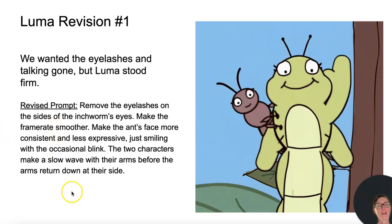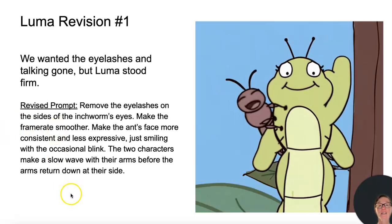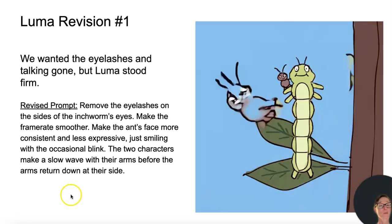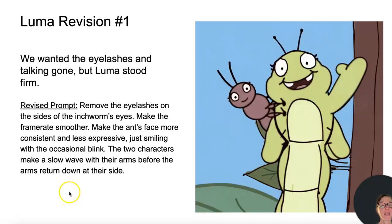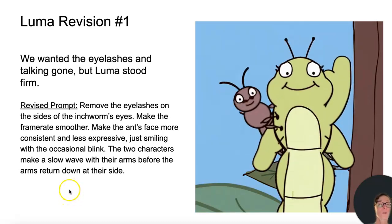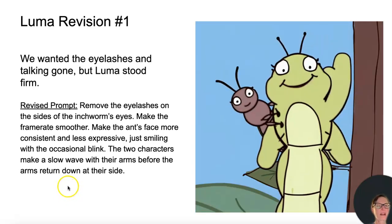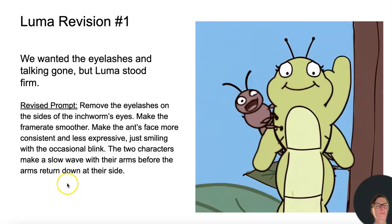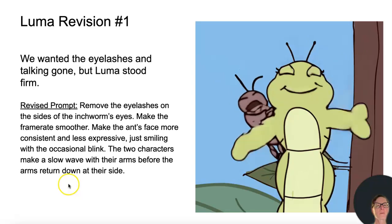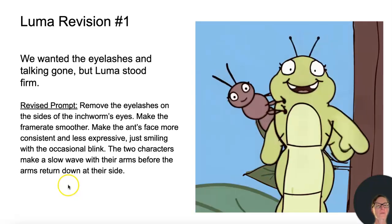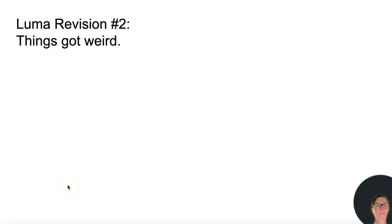Our revised prompt: remove the eyelashes on the side of the inchworm's eyes, make the frame rate smoother, make the ant's face more consistent and less expressive — just smiling with the occasional blink. The two characters make a slow wave with their arms before the arms return to their side. Revision number two: things got weird.